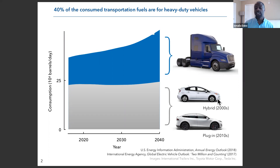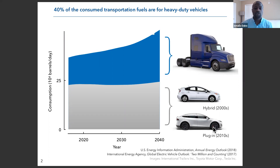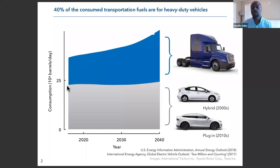You can see that there are essentially two very large contributions. About 25 million barrels per day of gasoline are used by light-duty vehicles. The trend over time has stabilized and is predicted to remain stable for the next few years, because of progress in energy efficiency — cars now are more efficient than before — and also due to the development of new technologies: hybrid vehicles since the 2000s and plug-in electric vehicles since 2010.